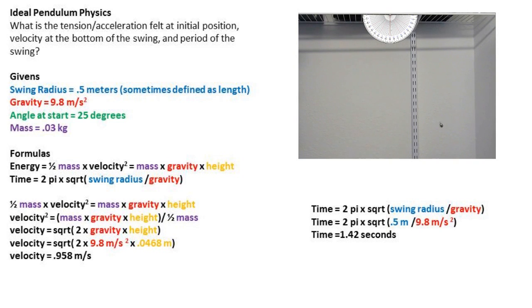Finally, we can plug our swing radius and acceleration due to gravity into the time for a period formula to give us our total time for one period of 1.42 seconds. I placed a timestamp on the video, and you can see that the 1.42 second time is pretty close to the fishing lure pendulum example.